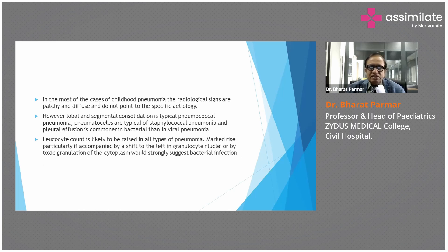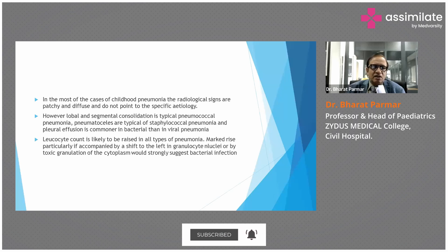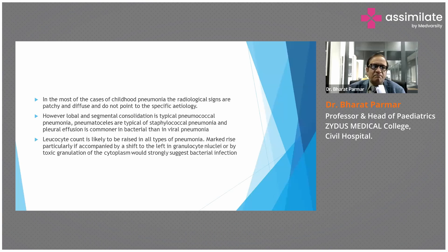In most cases of childhood pneumonia, the radiological signs are patchy and diffuse and do not point to a specific etiology. However, lobar and segmental consolidation is typical of pneumococcal pneumonia, pneumatoceles are typical of staphylococcal pneumonia, and pleural effusion is commoner in bacterial pneumonia rather than viral pneumonia. Leukocyte count is likely to be raised in all types of pneumonia. A marked rise, particularly if accompanied by a shift to the left in granulocyte nuclei and/or toxic granulation of cytoplasm, would strongly suggest bacterial infection.